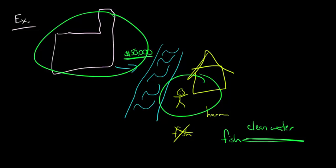Now, transaction costs are low here. And the reason that transaction costs are low is because there's just one person who's being harmed and then there's one factory. And so they can bargain with one another.